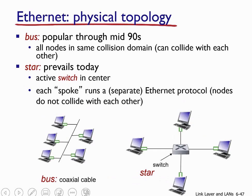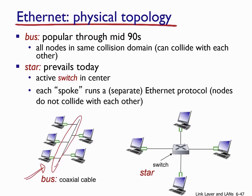Ethernet has two main physical topologies: the bus topology and the star topology. The bus topology is the old-fashioned topology where all nodes share a coaxial cable in the same collision domain. If two or more hosts transmit simultaneously, their signals interfere and cause a collision. In contrast, the star topology — common today — has an active Ethernet switch in the center with each host connected separately to one of the switch's physical ports via an Ethernet cable, eliminating a single shared collision domain.